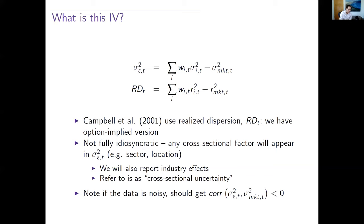A data quality check: if the Berkeley data were just noise, I would expect a strong negative correlation between cross-sectional uncertainty and market uncertainty, because noisy firm-level options would show up as negative covariance with the market component when we subtract it. So if we find a positive or near-zero correlation between the two, that's evidence the data is not junk. We can check for that.